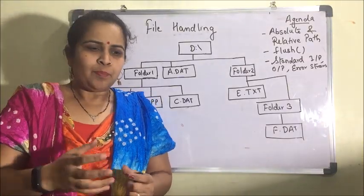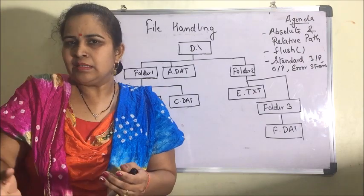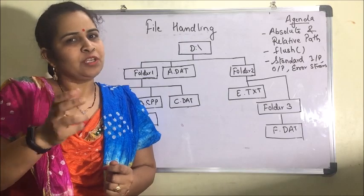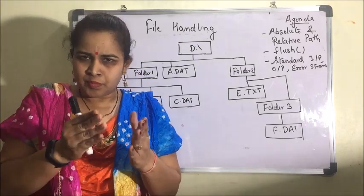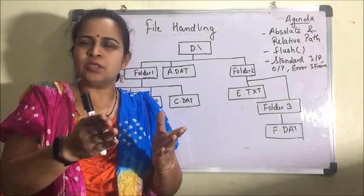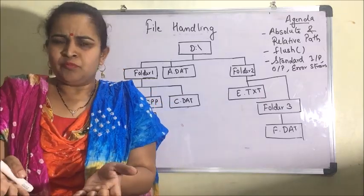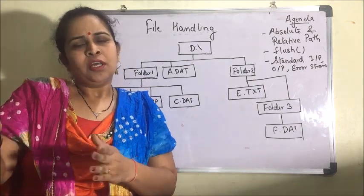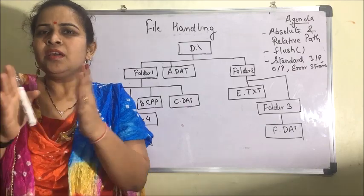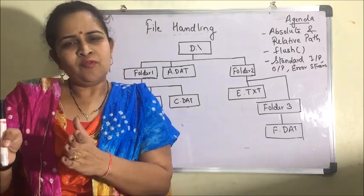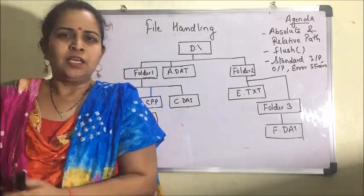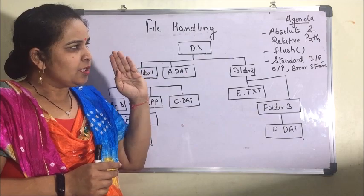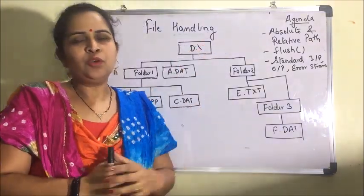First of all, absolute path and relative path. A path is the exact location of a file. Suppose I have kept a file shilpi.py in my folder on D drive. The location of that file — for example, D drive, then my folder, then the file — is known as the path. We can write a path in two ways: absolute path and relative path.